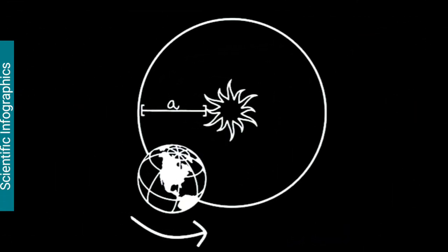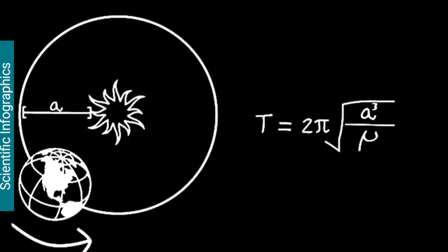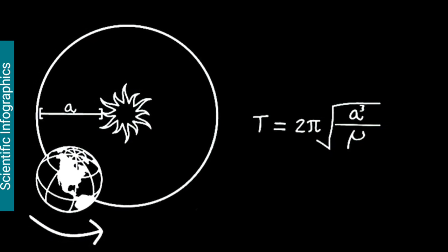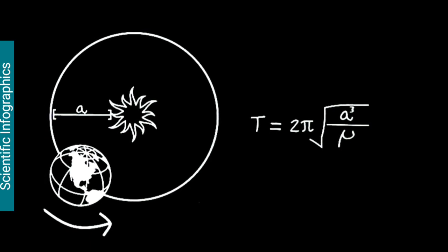We can calculate the time taken by Earth to complete one revolution around the Sun using this equation: T equals 2π times the square root of a cubed over μ.